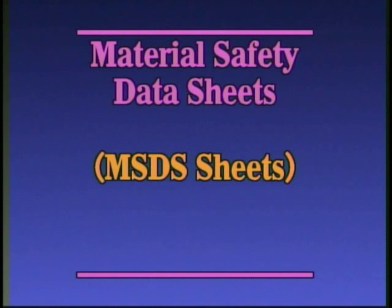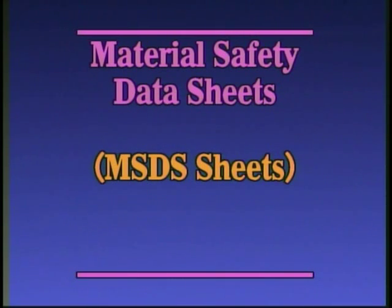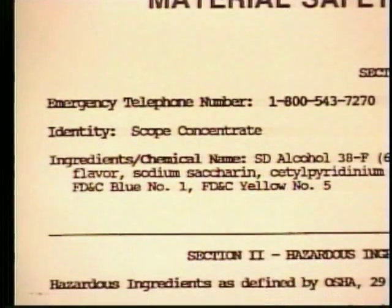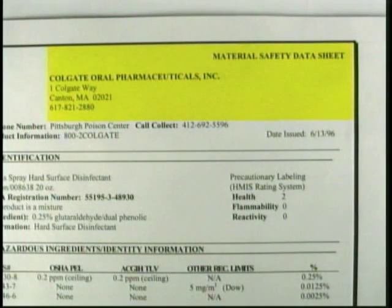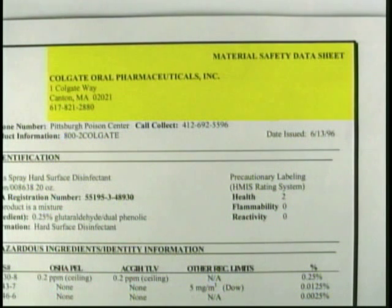Information on any dental material, cleaning material, or office supply is provided on Material Safety Data Sheets, or MSDS Sheets. These are required by law to be sent along with any purchased material or product. This MSDS information is provided by the manufacturer and can be accessed by any employee if a problem or question about a material or product arises.